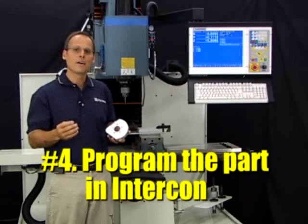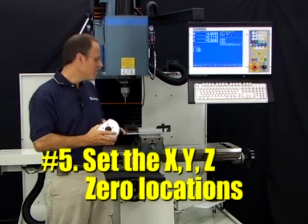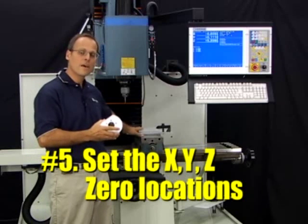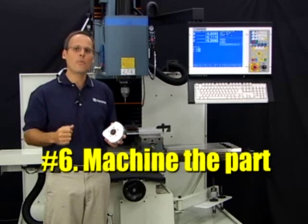Number four, go program that part. Number five, get your vise or fixture up on the table and get your x, y, z, zero position set with that vise or fixture. Number six, of course, is actually machining the part.